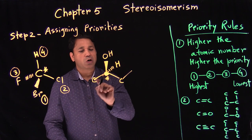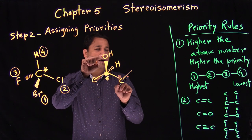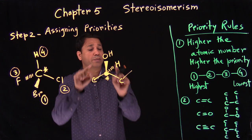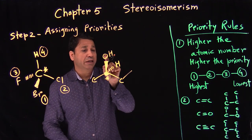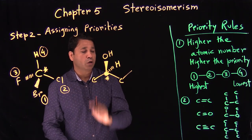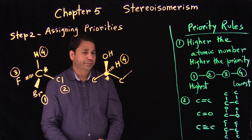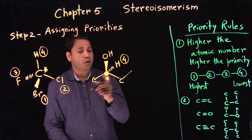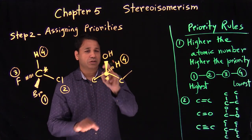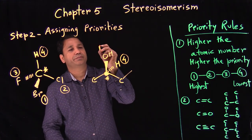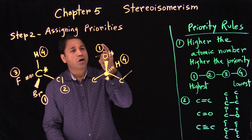So we have oxygen, hydrogen, carbon, and carbon. There's a tie here. What we're looking at is the first point of contact. Hydrogen should always get fourth priority. The carbon attached to oxygen has an atomic number of eight versus carbon's six, so oxygen gets number one priority. We've found priorities one and four.